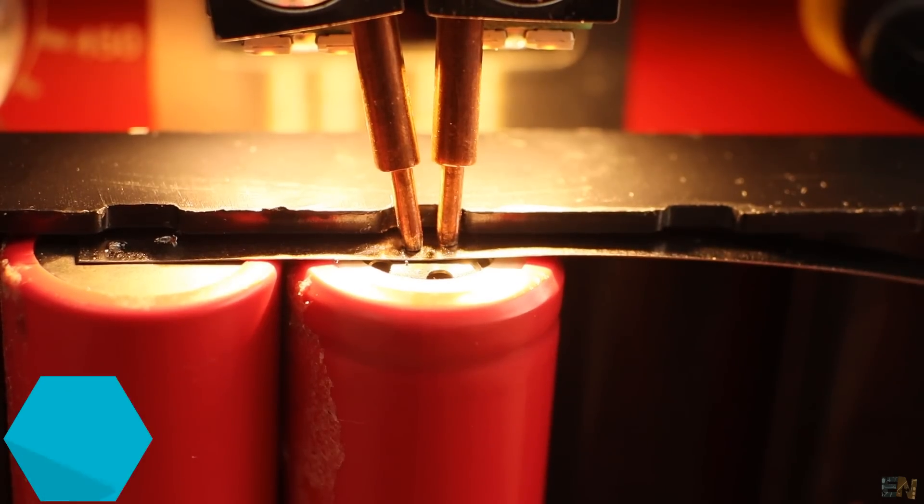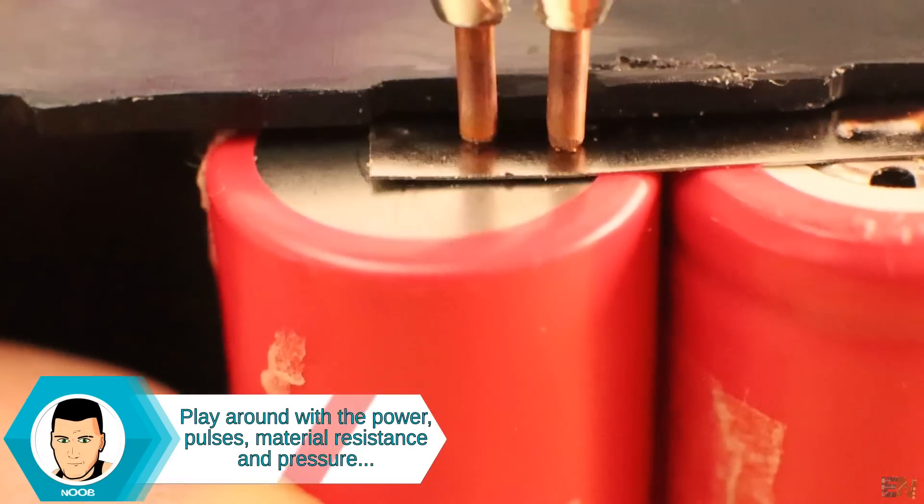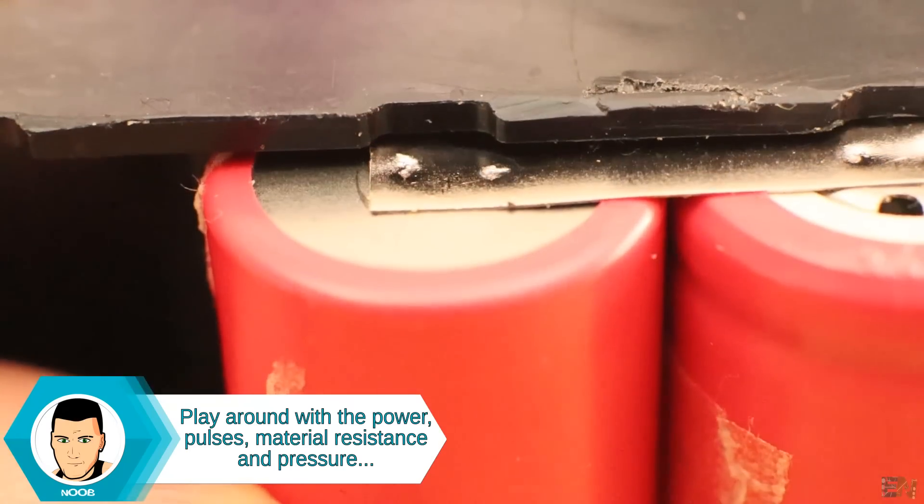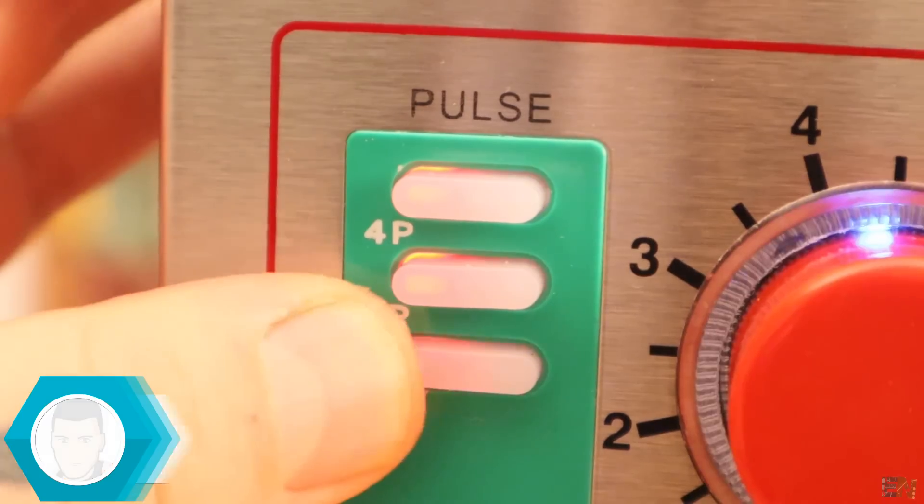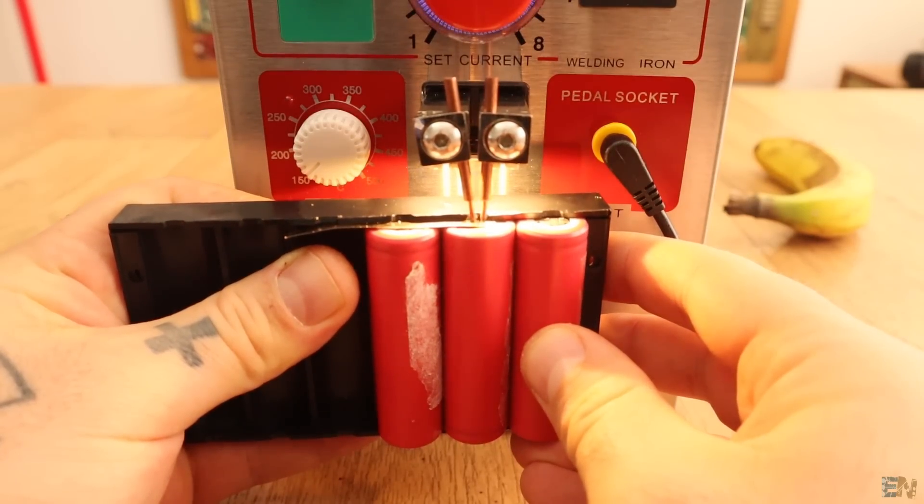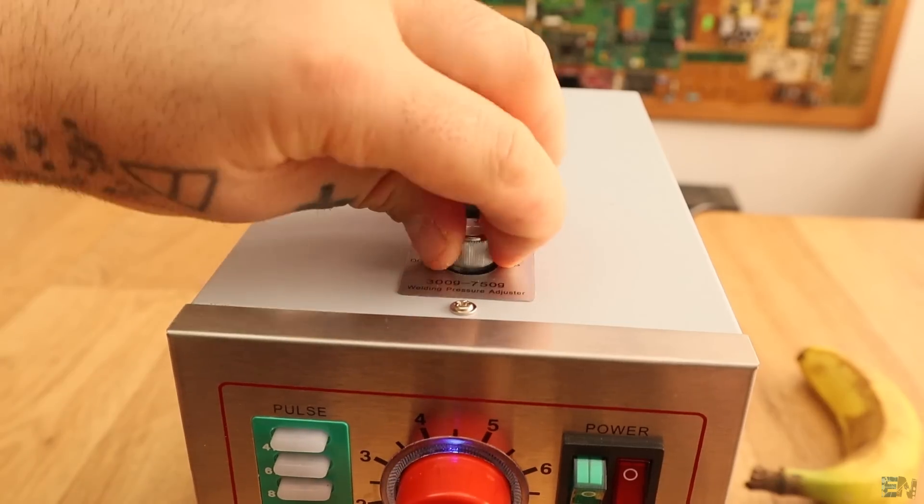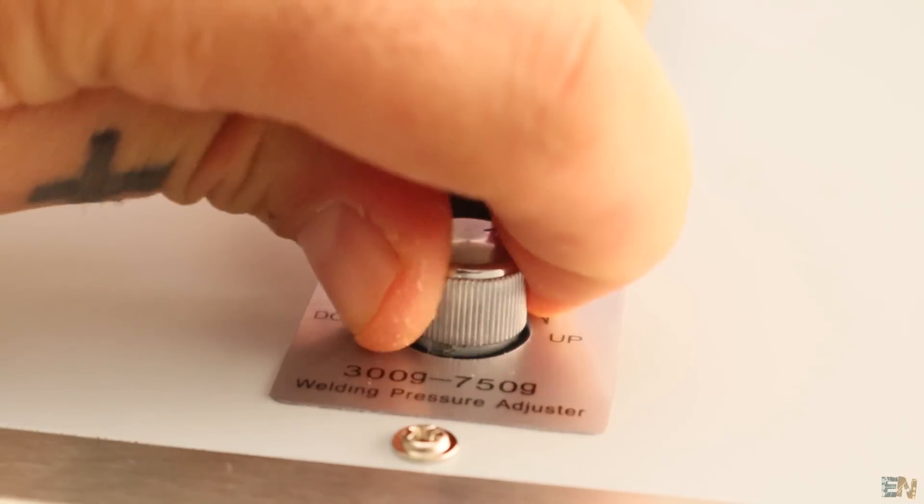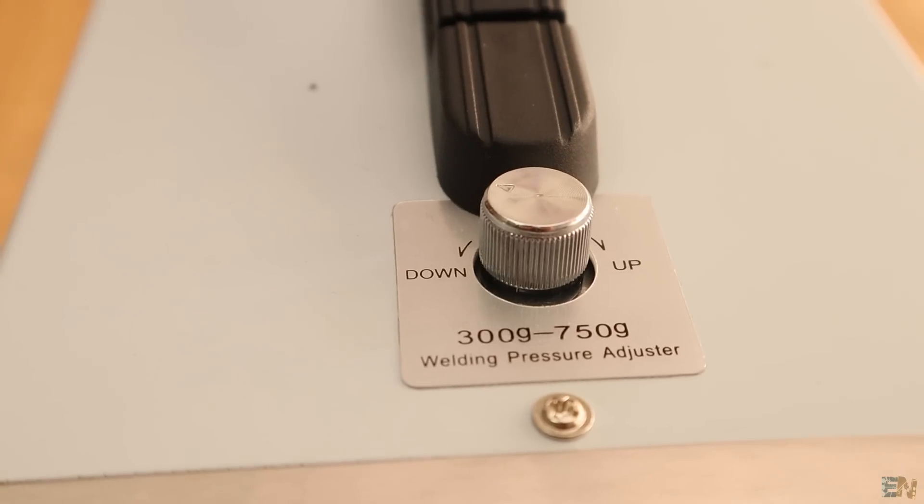So when you solder, there are 4 variables to have in mind. First the power applied, so the amount of current. Then you have the amount of pulses, the resistance and also the pressure that you make against the electrodes. On top of the station, we have this dial, used to adjust the pressure made by the electrodes. Rotate this and make the pressure higher or lower.